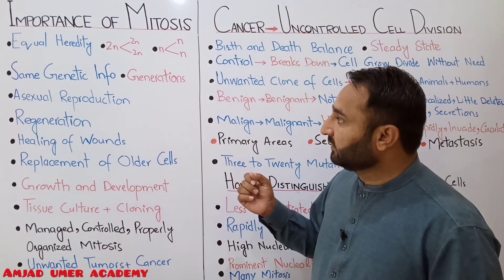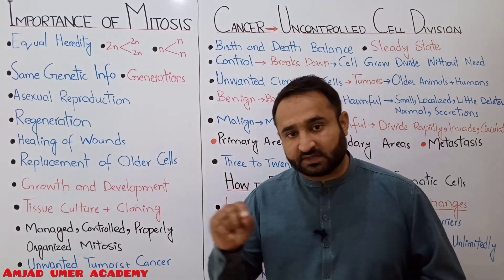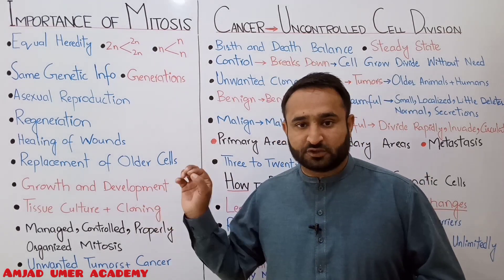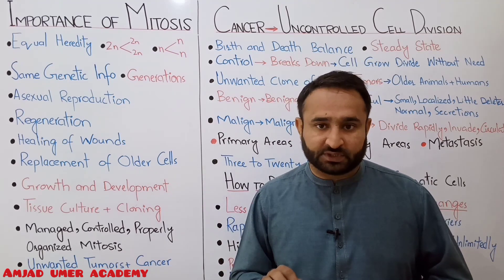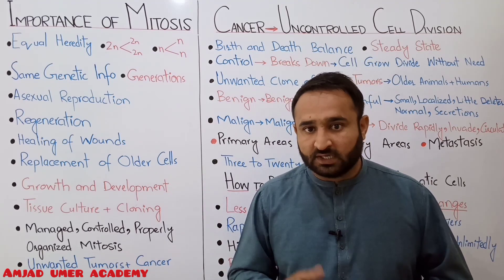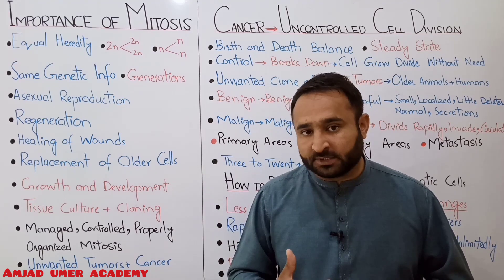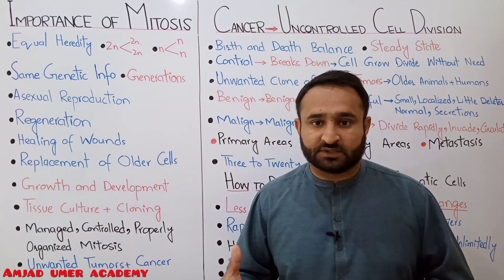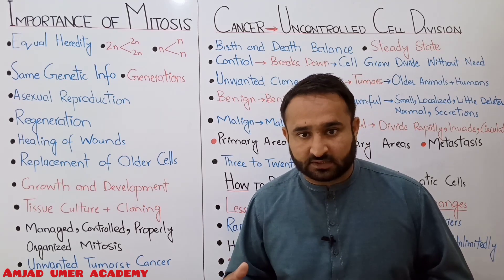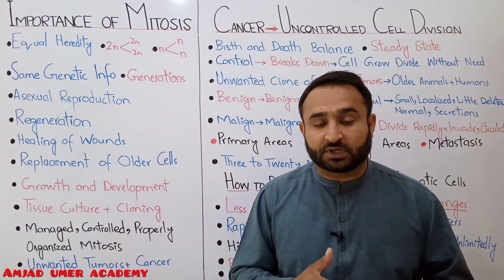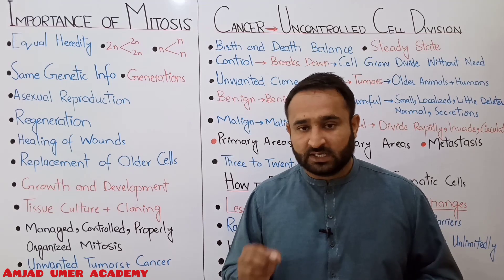The second point: same genetic information generation after generation. Mitosis is the basis of asexual reproduction, and the genetic information does not change. There is no variation in it, no crossing over, no genetic recombination.